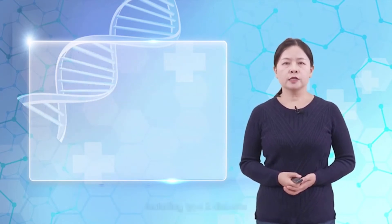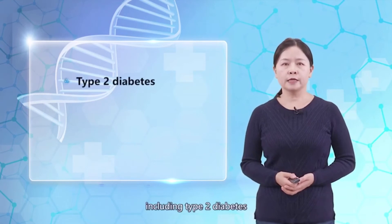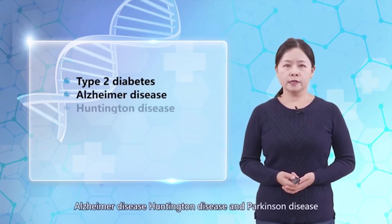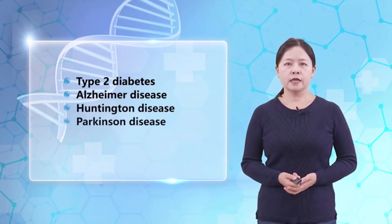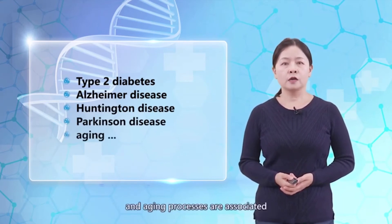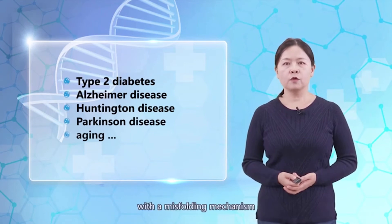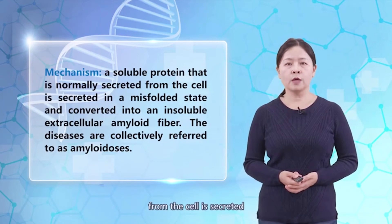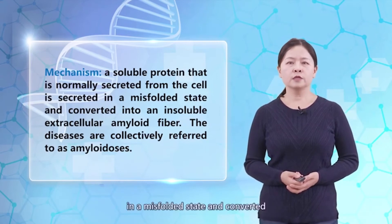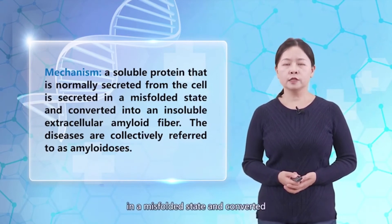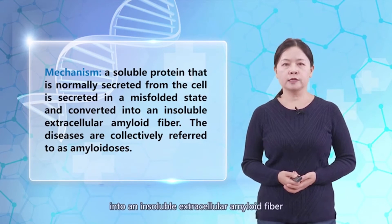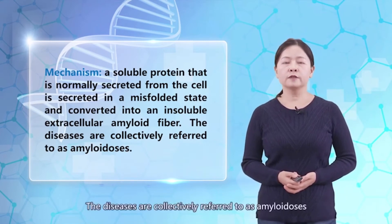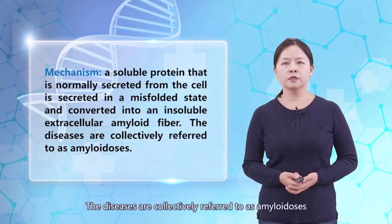Many conditions including type 2 diabetes, Alzheimer's disease, Huntington's disease, and Parkinson's disease, and aging processes are associated with the misfolding mechanism. A soluble protein that is normally secreted from the cell is secreted in a misfolded state and converted into an insoluble extracellular amyloid fiber. These diseases are collectively referred to as amyloidoses.